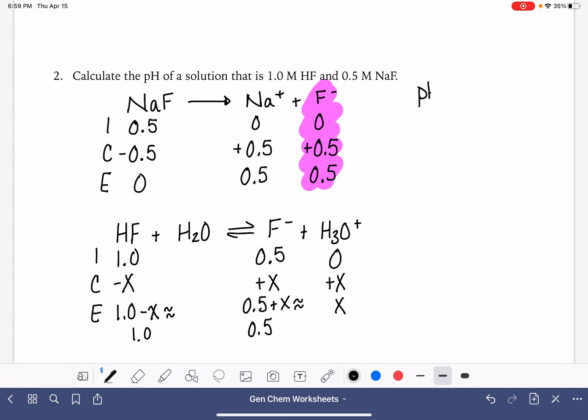Now, remember, our goal is to calculate the pH. The pH is the negative log of the H3O plus concentration. And in this ICE table, the H3O plus concentration is coming from X. So again, we need to figure out what X is.